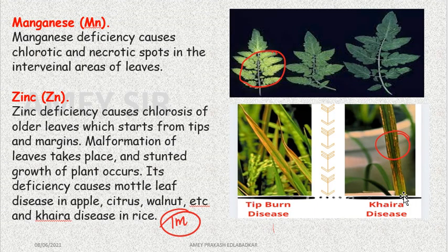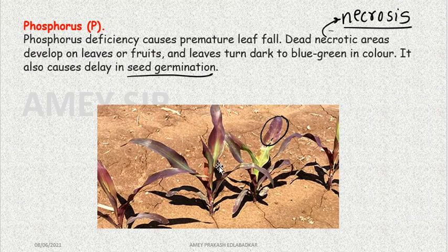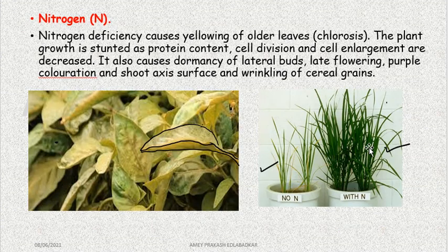Khaira disease — we should not just memorize it, we must understand what khaira disease actually is. We need to understand all these things properly. There are also plants with leaves of such color naturally — but this is a deficiency of phosphorus — so we must learn to differentiate. What happens in excess nitrogen, what happens with less nitrogen, what is its impact on plant growth — these images are given for that purpose. This video is about deficiency symptoms and toxicity of elements.